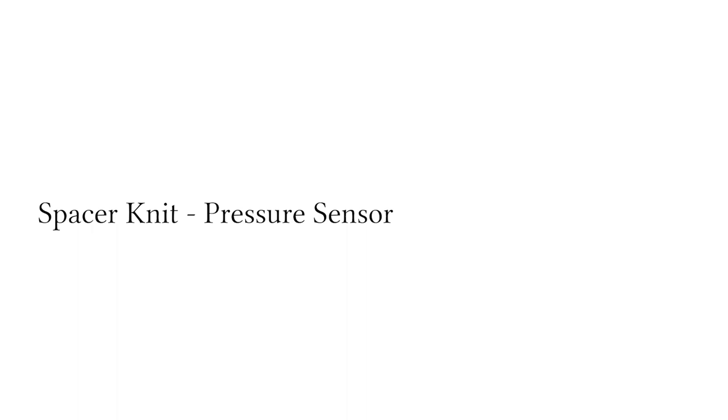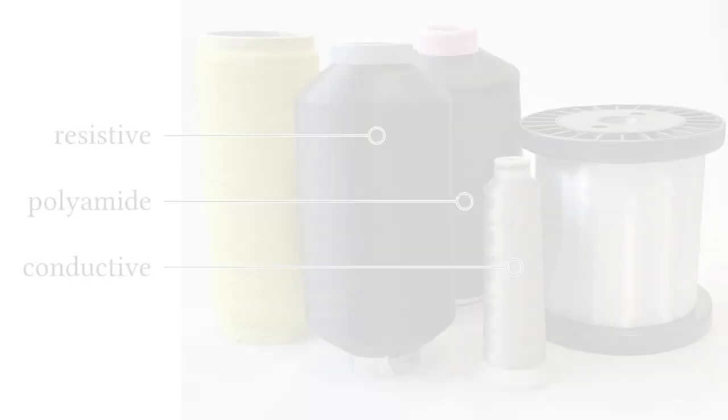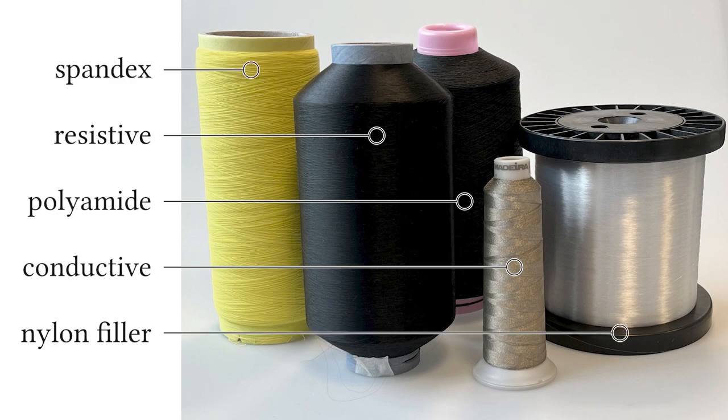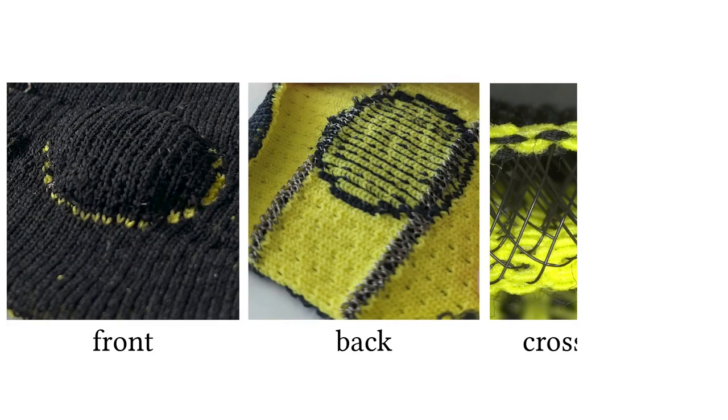For our pressure sensors, additional non-functional yarn types are required to achieve volumetric knit structures. The filler material consists of nylon monofilaments and resistive yarns.